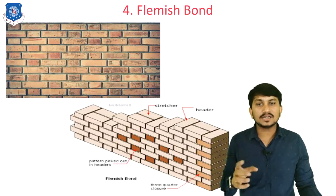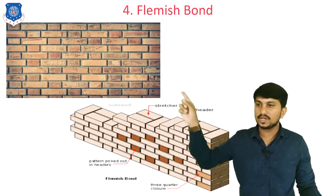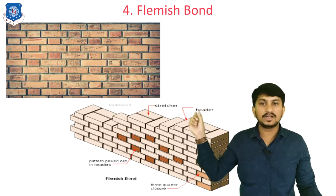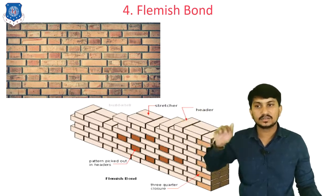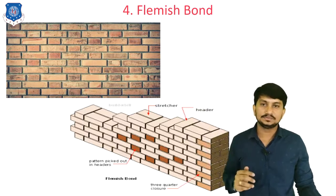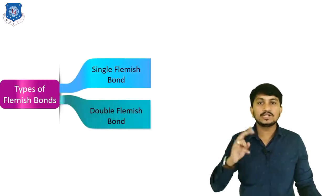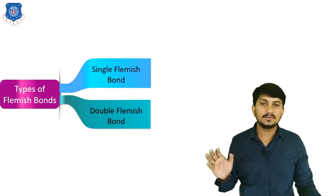In Flemish bond, in each layer, alternate stretchers and headers are provided — one stretcher, one header, one stretcher, one header in each layer. Flemish bond is of two types: single Flemish bond and double Flemish bond.